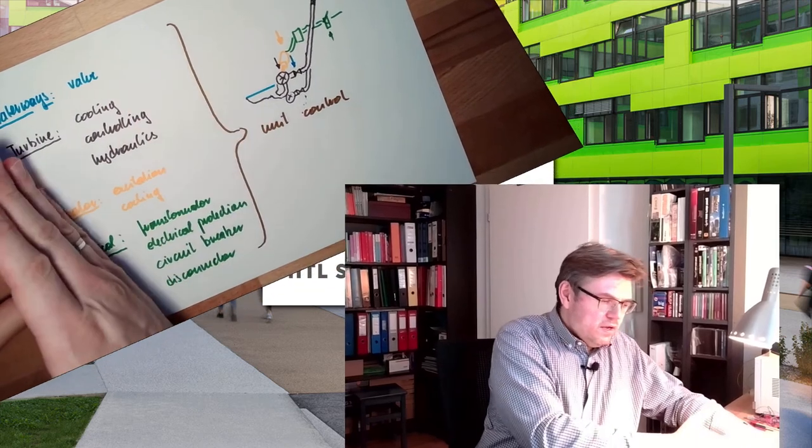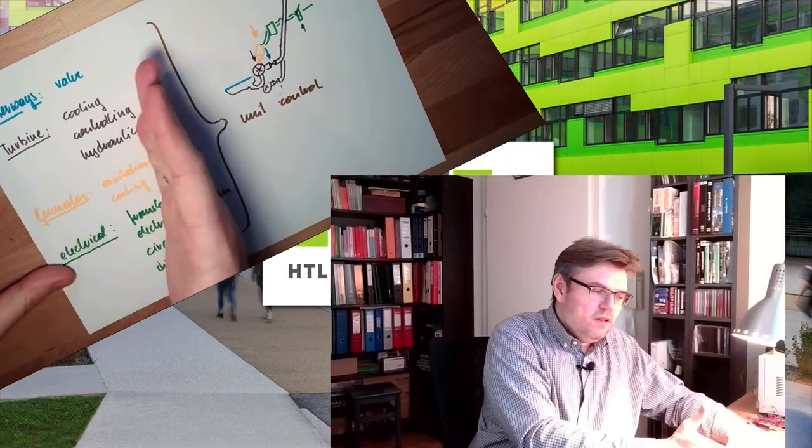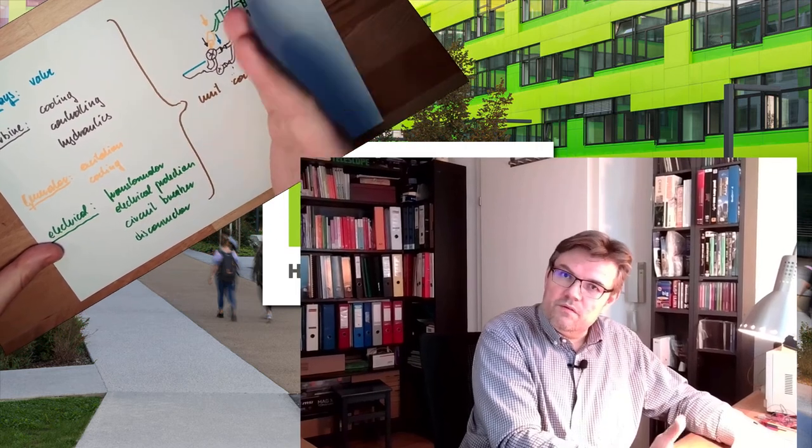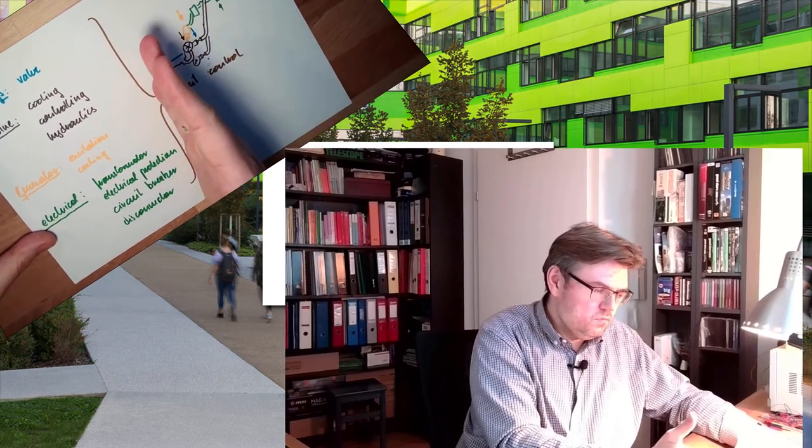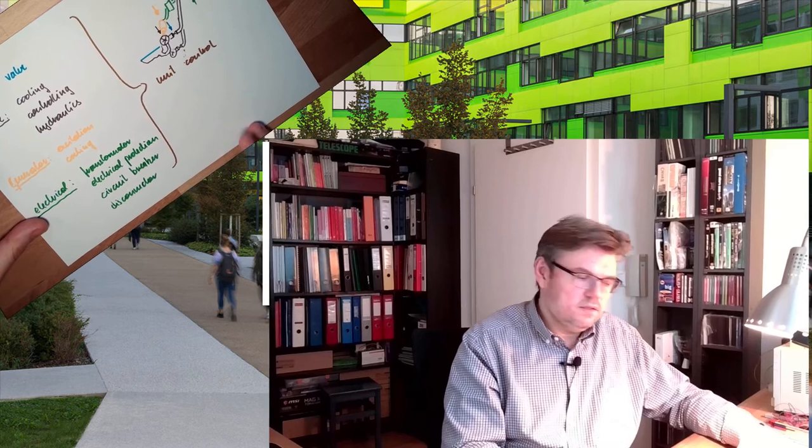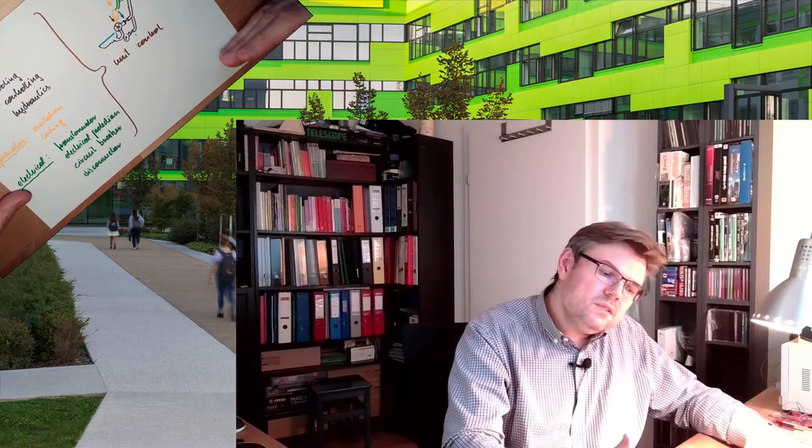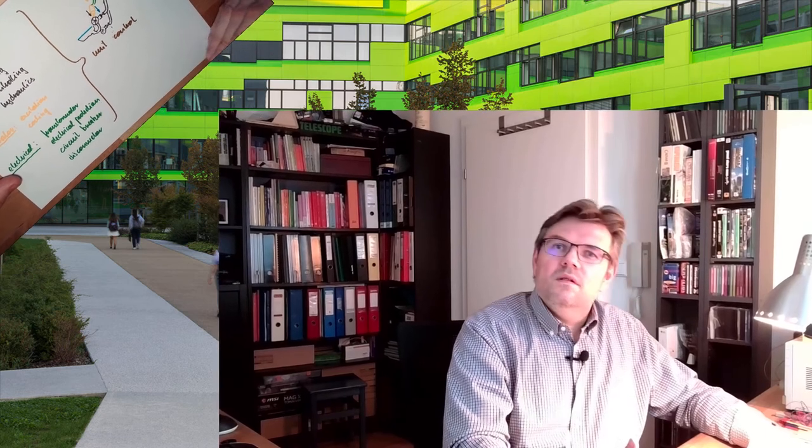This here is field level or field control level. And then here we have the unit control level. These are the two sides, field and unit control. The two lowest levels of our automation pyramid, if you remember. So this is what the unit control system is doing in a hydropower plant.